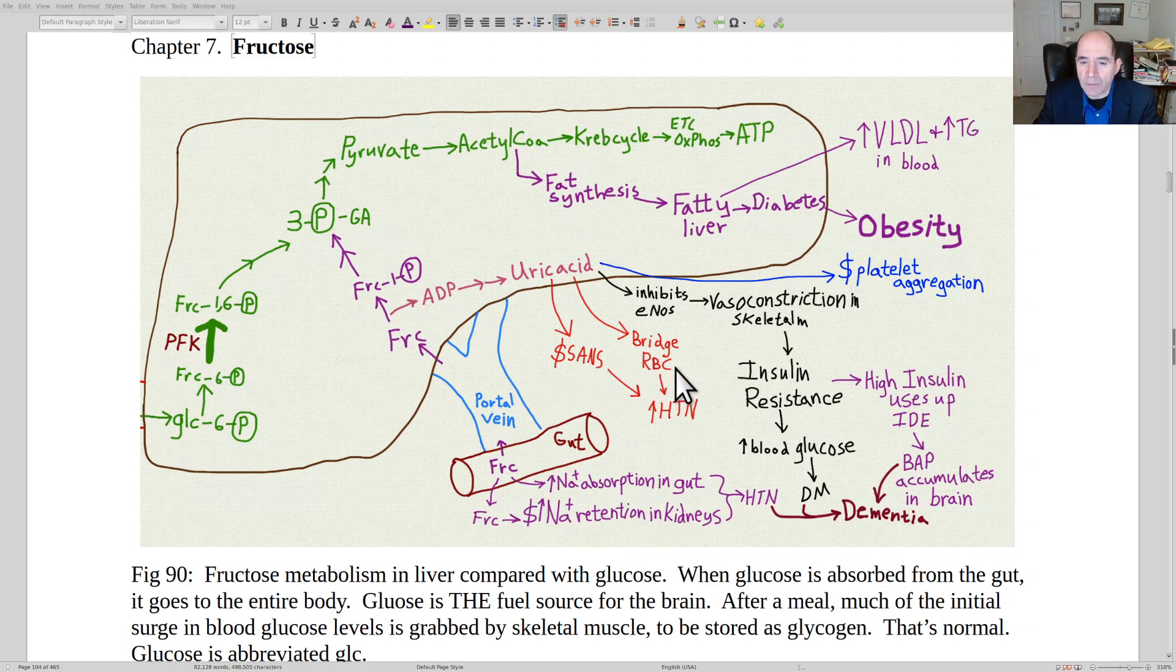All of these things together, sympathetic activation, bridging RBCs, increased sodium getting into the blood, they cause more hypertension. And hypertension is a major risk factor for atherosclerosis, and atherosclerosis is a major risk factor for dementia.